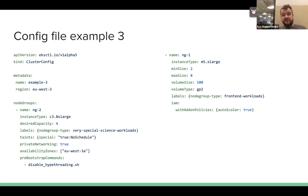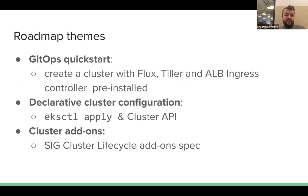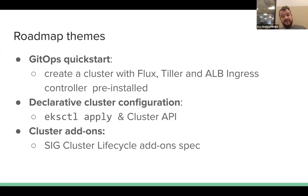You can find more examples on eksctl.io in our docs. Going forward, we are working towards three main themes: GitOps quick start, declarative cluster configuration, and cluster add-ons. The GitOps quick start is an experimental feature in recent releases that allows you to install Flux and optionally Tiller, and populate a profile of workloads through GitOps enabled by Flux, which is now a CNCF sandbox project.